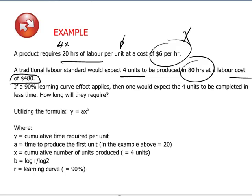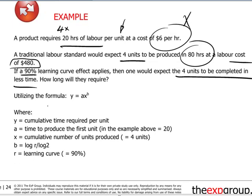If we introduce a learning curve effect of 90 percent, we would expect that as the four units are produced there will be greater efficiency as labor climbs the learning curve, and the four units should be completed in less time. The question is: how long should they require?